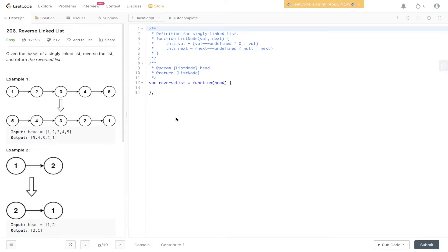Question 206 of LeetCode: Reverse Linked List. Given the head of a singly linked list, reverse the list and return the reversed list. So we have one through five and we need to reverse that list so it's five through to one. Pretty straightforward question, another good introductory question to linked lists.